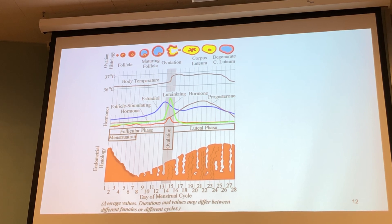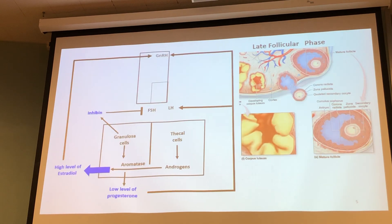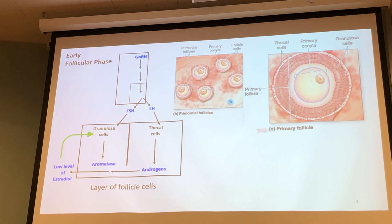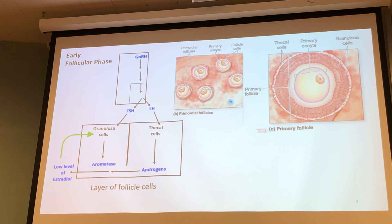Going back to day one of menstruation, we have what's called a pulsatile release of GnRH. This is different from other hormones we've discussed, like CRH triggering ACTH or TRH leading to TSH — those were a continuous stream of releasing hormones. GnRH is pulsatile, with a frequency of every 60 to 90 minutes. This pulsatile release will trigger the release of FSH first. Look at the name — follicle stimulating hormone — it needs to stimulate our primordial follicles.